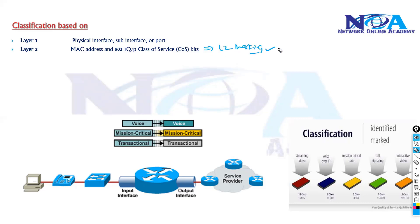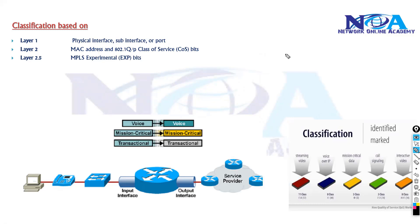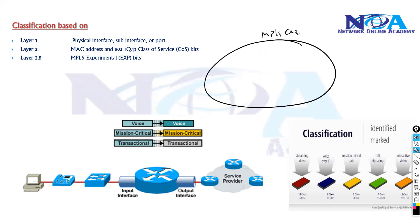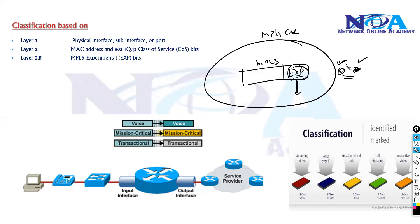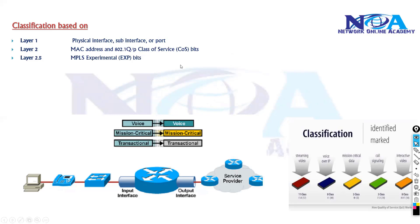At layer two there are some marking bits we'll discuss in the marking section later. We can also use marking values to differentiate traffic. Another option is experimental bits used in MPLS — if you're running an MPLS core network, the MPLS header contains experimental bits with values from 0 to 7, where 7 is high priority and 0 is low priority.